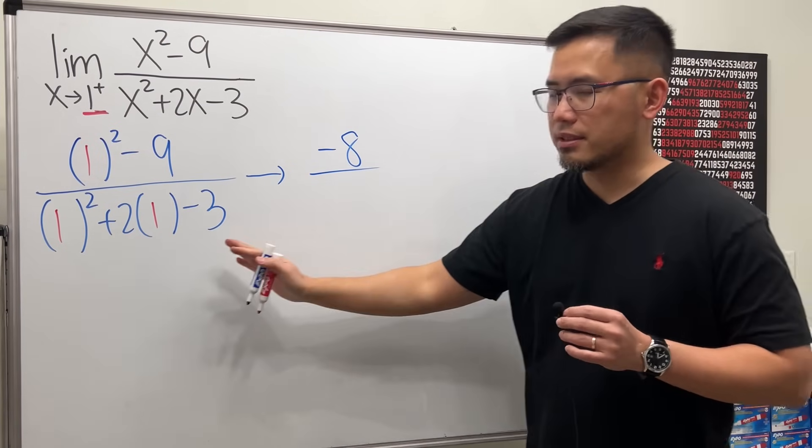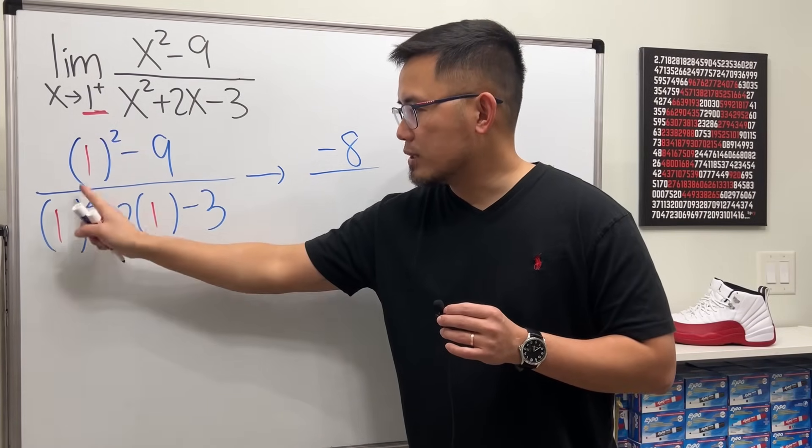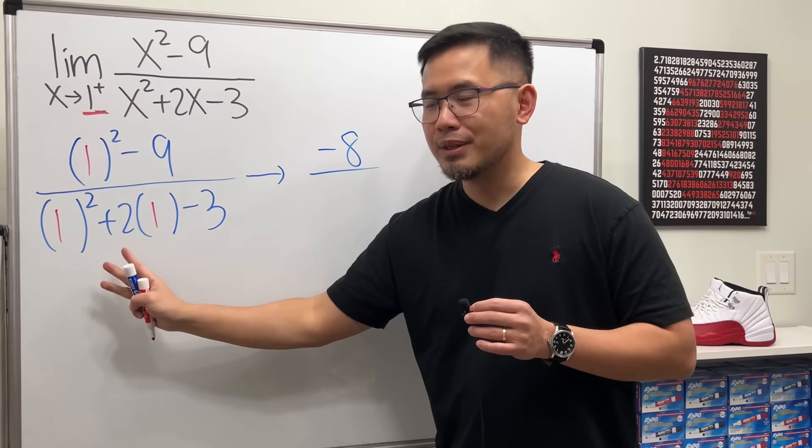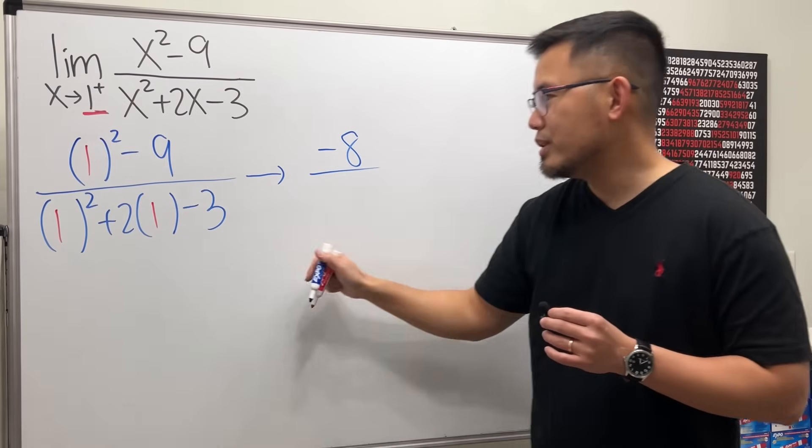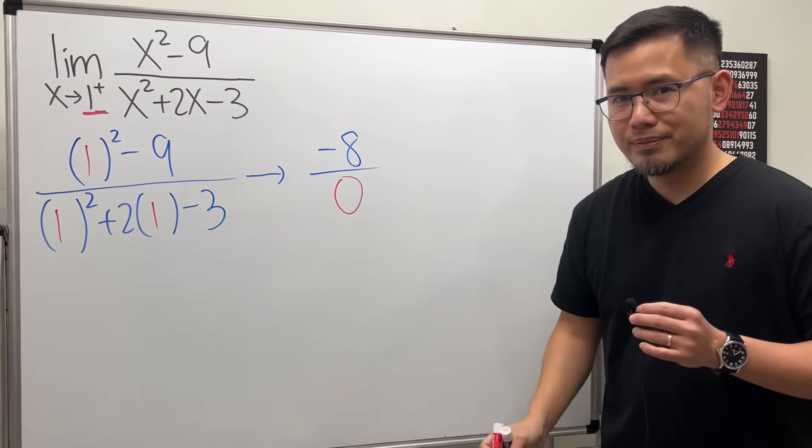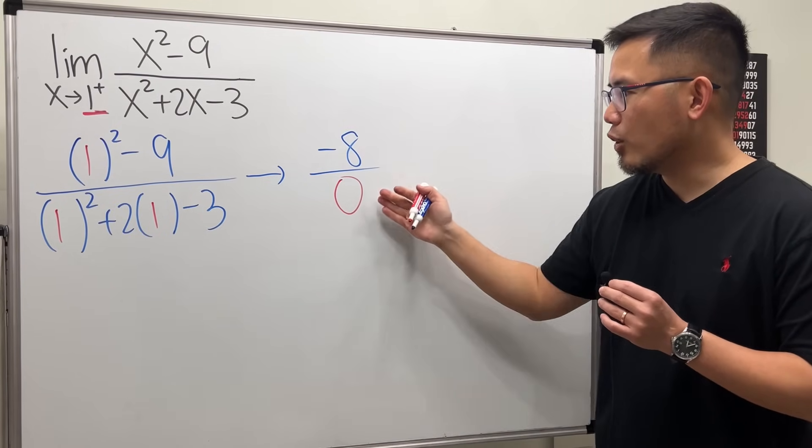Now here is the trouble. On the bottom we have 1 squared which is 1, plus 2 times 1 which is 2, all together we get 3 minus 3, we end up with 0. Now we have negative 8 over 0.